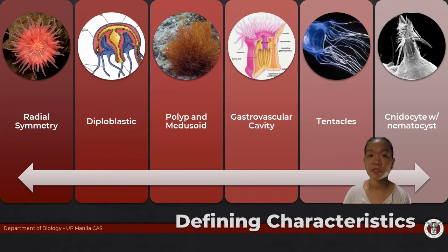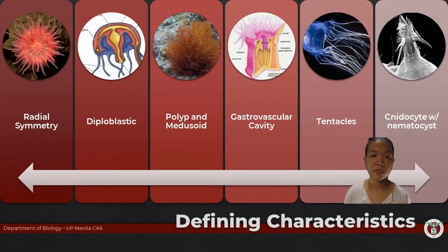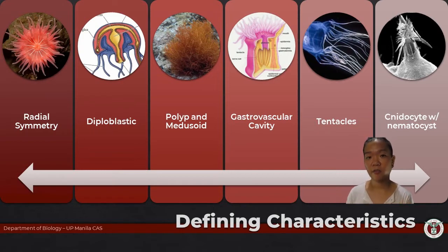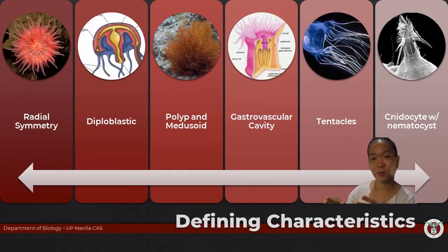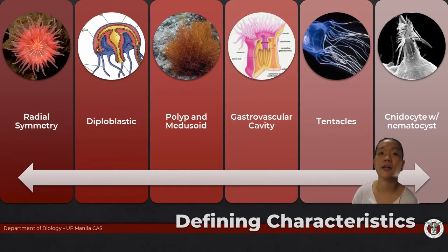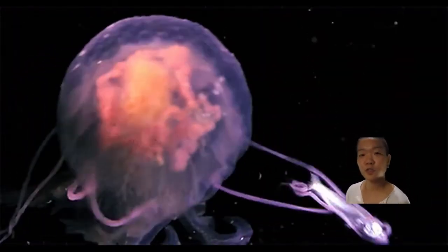That's why polyps choose not to move, and medusae that do move are very slow. Being a predator while slow is a challenge — and that's where the cnidocyte with its nematocyst comes in as a solution for capturing food.